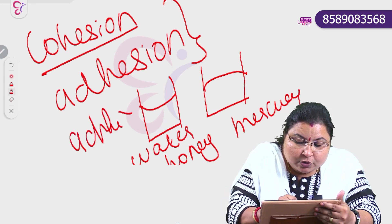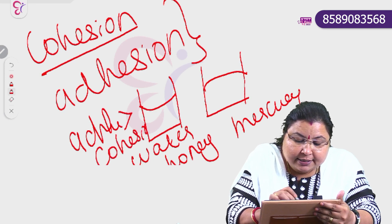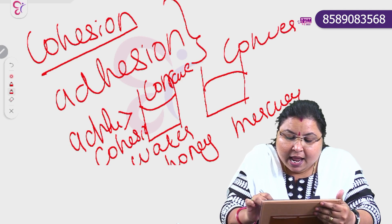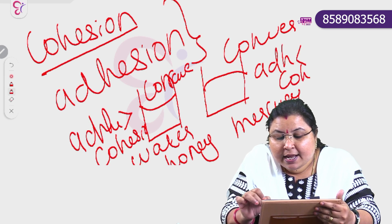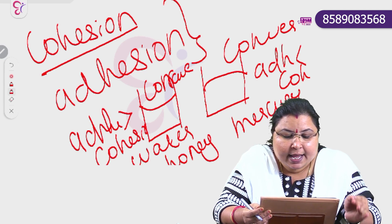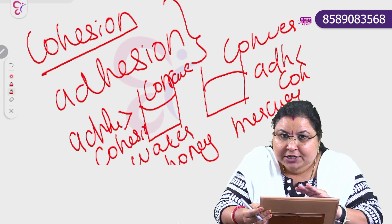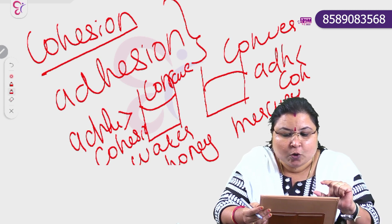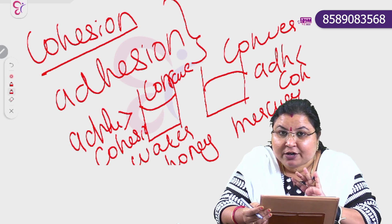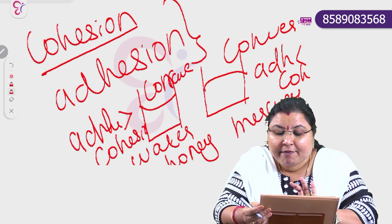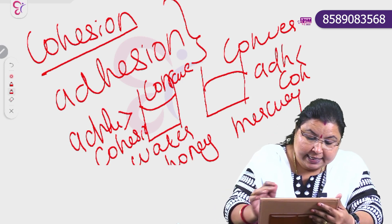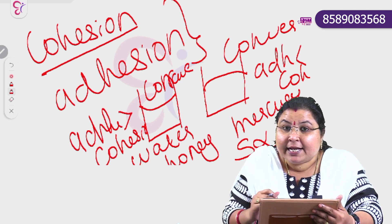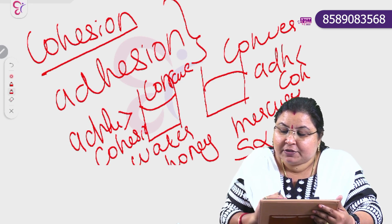When adhesive force is greater than cohesive force, the surface forms a concave shape. When adhesive force is less than cohesive force, the surface forms a convex meniscus shape. Surface tension is inversely proportional to temperature.